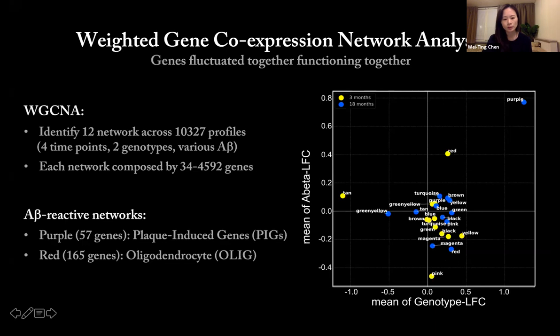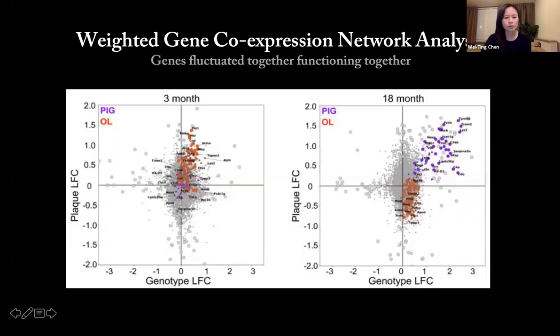This network is silent at three months. The other interesting network is the red network, which is upregulated at three months but downregulated at eighteen months in the amyloid beta axis. We also do characterization to estimate the cellular composition of each network and which brain region they express. Eventually we named this purple network, composed of 57 genes, as plaque-induced genes network, the PIGs network. The red network is enriched with myelin-related transcripts, we call it oligodendrocyte network.